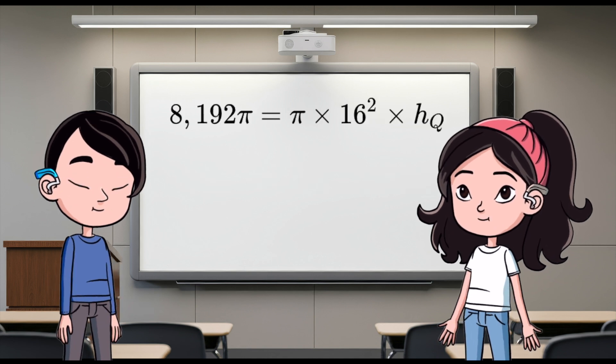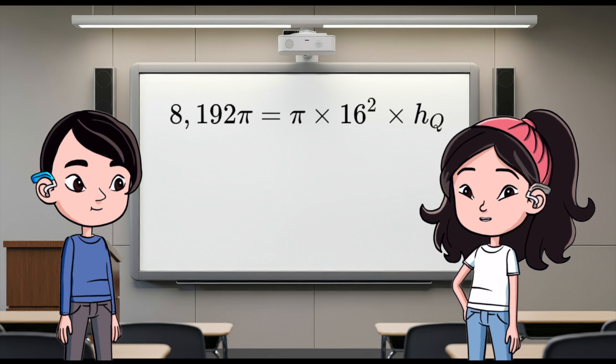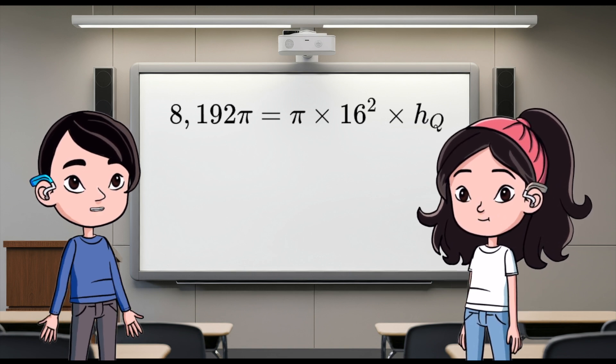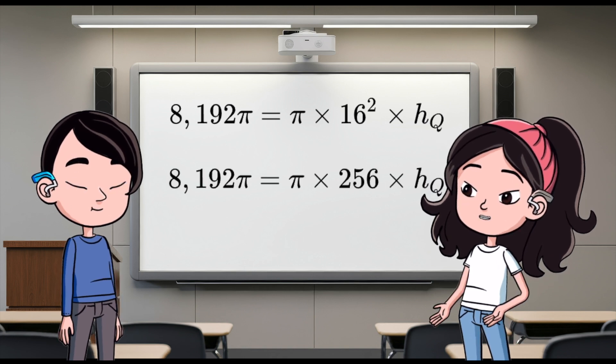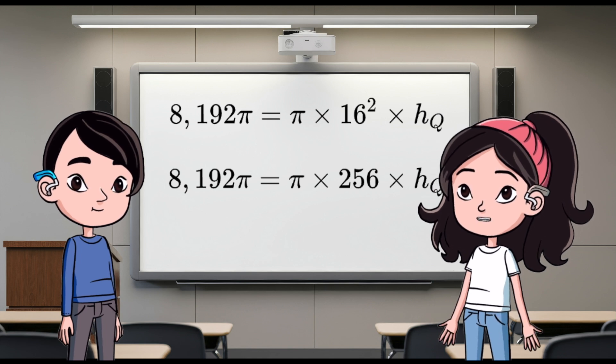Yeah, let's test it out. Using the volume formula, 8,192π equals π times 16² times h sub Q. Simplify 16², which is 256. So, we have 8,192π equals π times 256 times h sub Q.